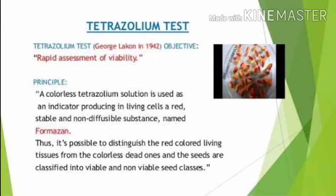The seeds are then placed in 0.5 to 1% 2,3,5-triphenyl tetrazoleum chloride or bromide solution. In viable seeds, the dehydrogenase enzyme converts 2,3,5-triphenyl tetrazoleum chloride into a red, stable, non-diffusable substance known as triphenyl formazan, which forms inside the seed cells, staining them red. Non-viable seeds do not attain any red color, or they only partially stain.